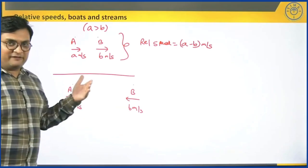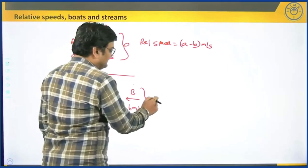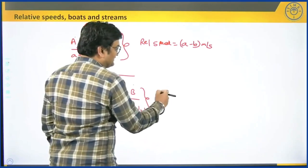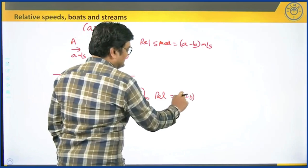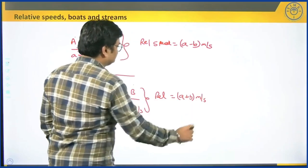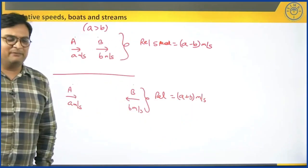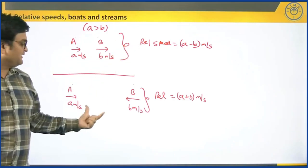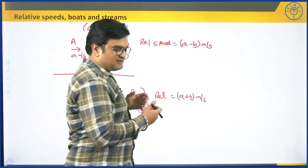When they are moving in the opposite direction, the relative speed of one person with respect to the other will be the sum of the speeds: a plus b meters per second. So in the case of same direction it is the difference, and in the case of opposite direction it is the sum of the speeds.